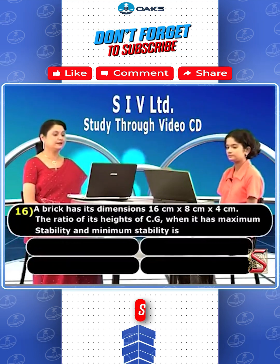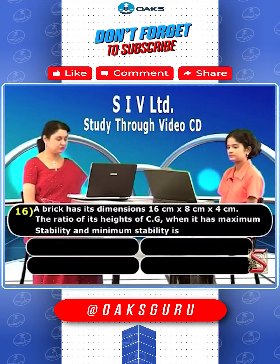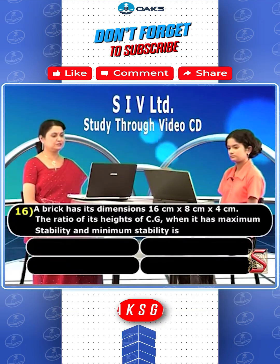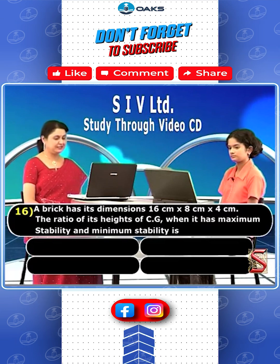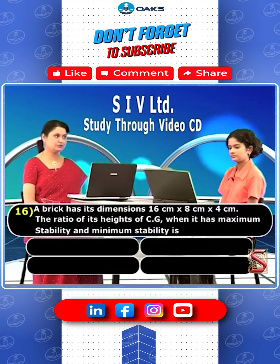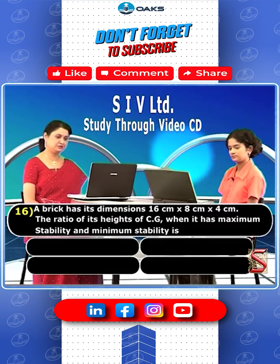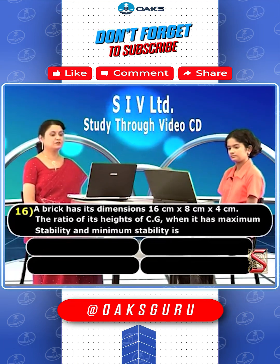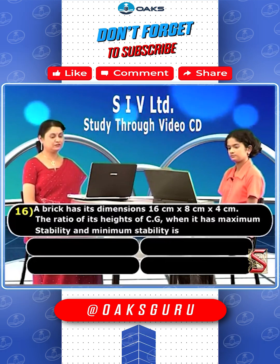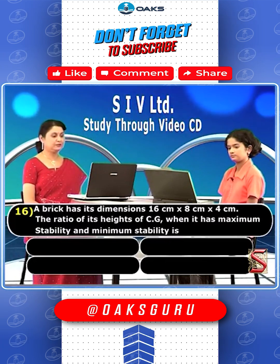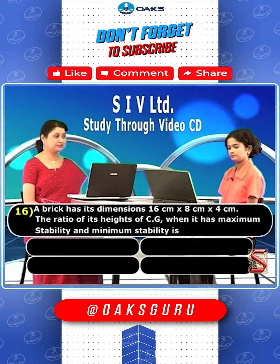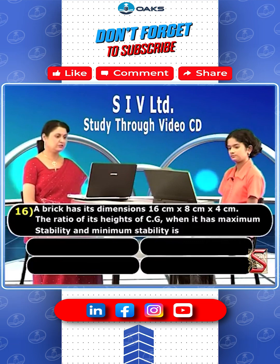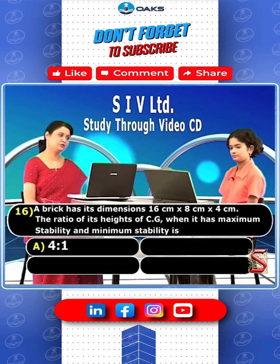A brick has dimensions 16 cm × 8 cm × 4 cm. The ratio of its height of center of gravity when it has maximum stability and minimum stability is asked.